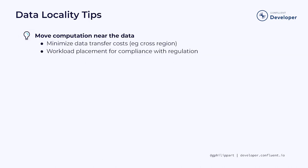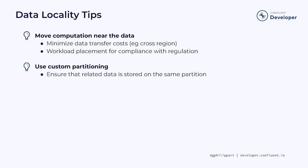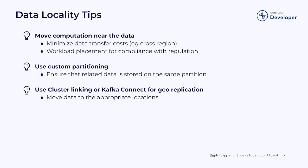The first data locality tip is that you should consider whether you can move the computation near the data. Most of the time, having data traverse an availability zone or region isn't a good idea, as cloud service providers charge more for data going out. Doing so can save you a significant amount of money, but also help be compliant with data residency laws if applicable. Another useful technique is custom partitioning, which ensures related data is stored on the same partitions for more efficient access and processing by consumers. Organizations can also take advantage of cluster linking or Kafka Connect to move data to the appropriate locations, allowing for more efficient processing and analysis.